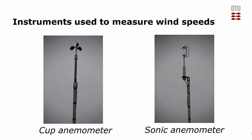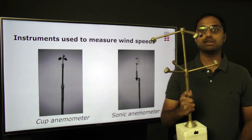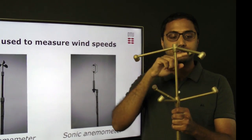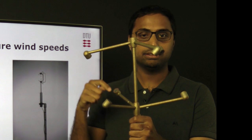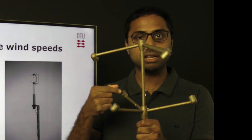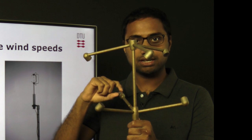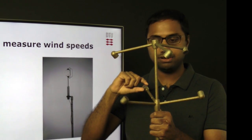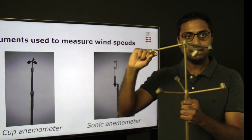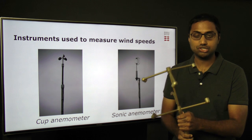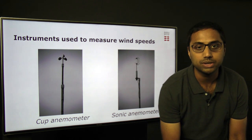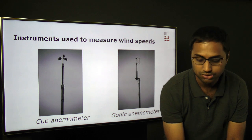Another commonly used instrument is the sonic anemometer, which is more reliable for measuring fluctuations of air parcels at much smaller timescales. It has a transmitter and a receiver on three different axes. Acoustic pulses are emitted from the transmitter, received by the receiver, and sent back. You measure the time it takes for the acoustic pulse to travel from transmitter to receiver and back. The difference in transit times is proportional to the wind speed.